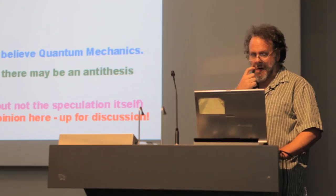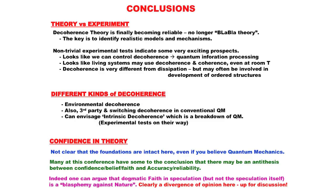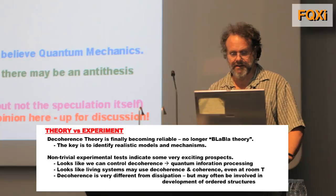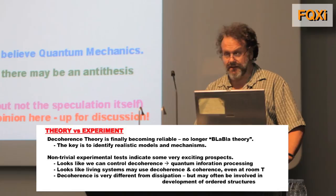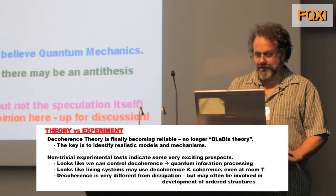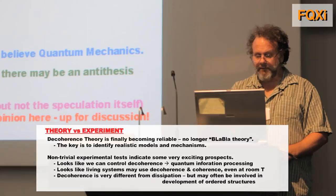I noticed that even the people giving talks in quantum gravity here still want to use a Hamiltonian. But the question I'm asking is whether we're allowed to. So to conclude: theory is very important, but it's very important to have experiment. As one Russian colleague of mine commented, the theory is no longer a 'blah blah' theory — which is actually very insulting in Russian — it's a real theory because you can test it. And the tests are very interesting, because not only does it look as if we can control decoherence, so that as Scott Aaronson was noting, quantum computation is maybe not such a silly idea, but it also seems that maybe living systems are using it in an essential way. And it possibly is involved in the development of ordered structures and therefore, if you like, the local reversal of the arrow of time.